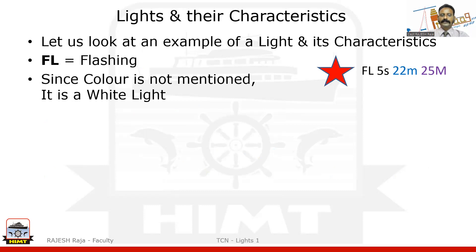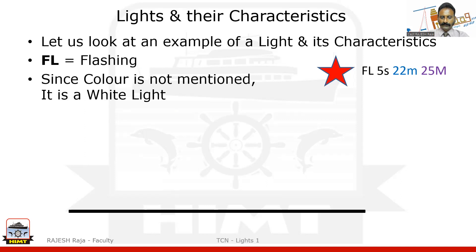Since the color is not mentioned, we always assume it is a white light. A white light cannot easily be shown on a white chart background, so yellow is chosen to represent a white light. Black represents darkness — the light is off — and then there is a spike of white light, followed by a gap.